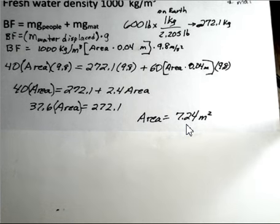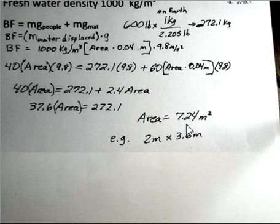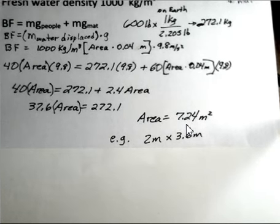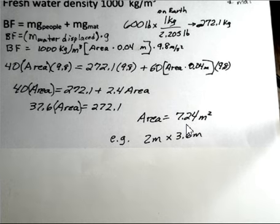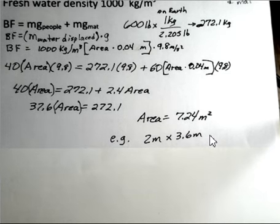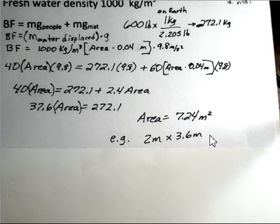That's reasonable — if we set 2 meters for the length of the mat in the direction people are laying down, then we have 3.6 meters across, and we could squeeze four people into 3.6 meters wide. So there's our calculation.